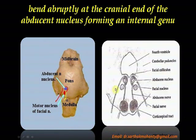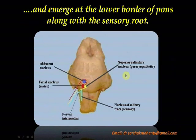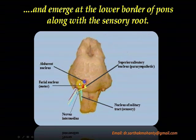This internal genu and facial colliculus can be seen in the picture. The motor root then emerges at the lower border of the pons along with the sensory root. This is the cerebellopontine angle where both roots emerge together.